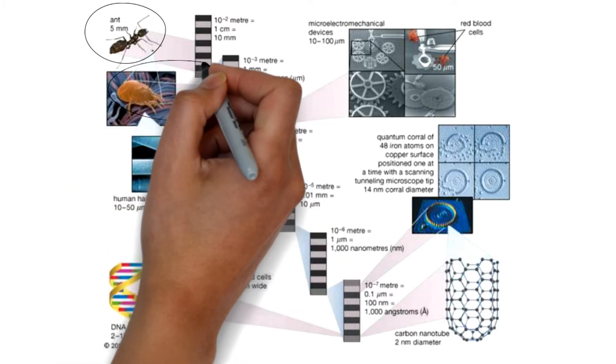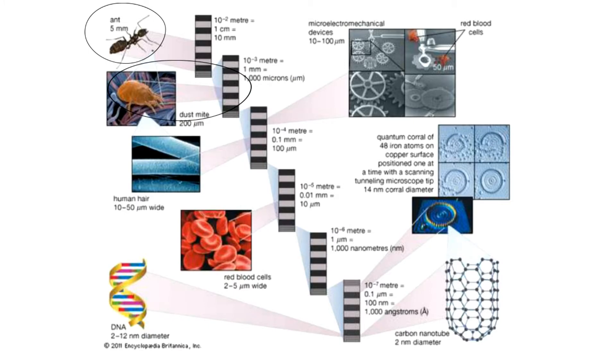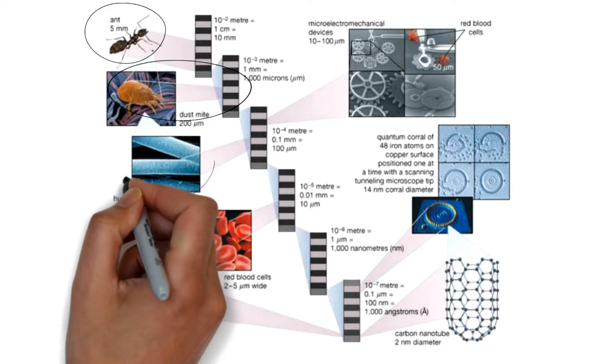The next one is the dust mite. Dust mite is just like a dot, and the size of the dust mite can be 1mm, that is 1000 microns, which is merely smaller than that of the ant.